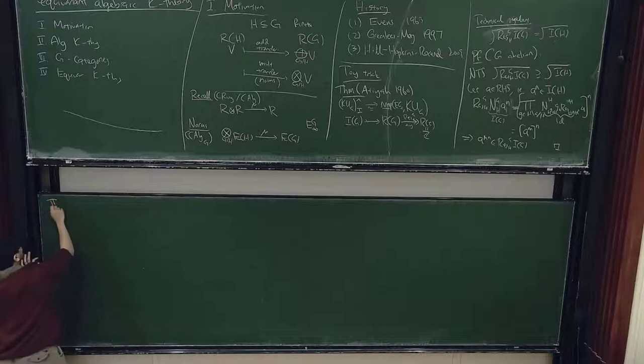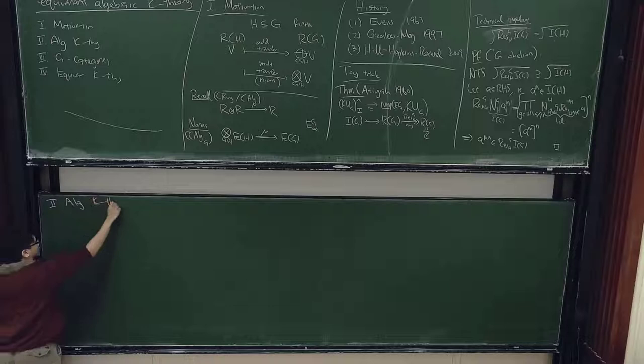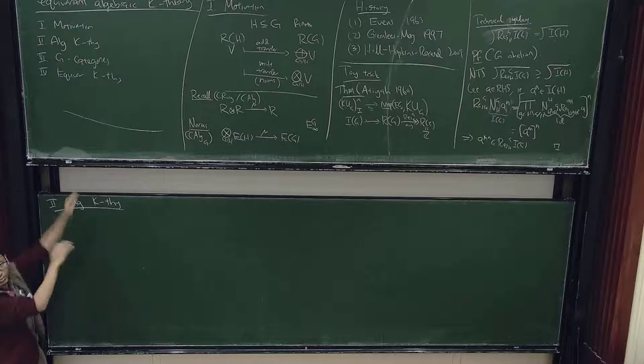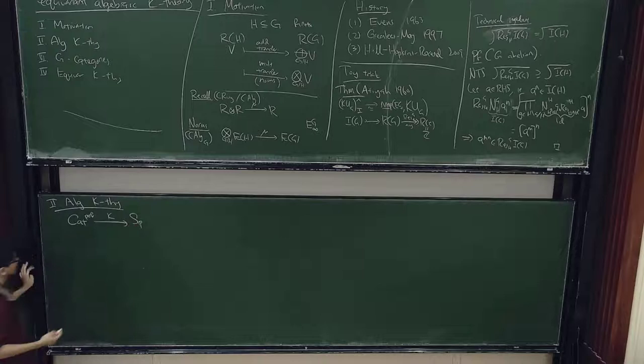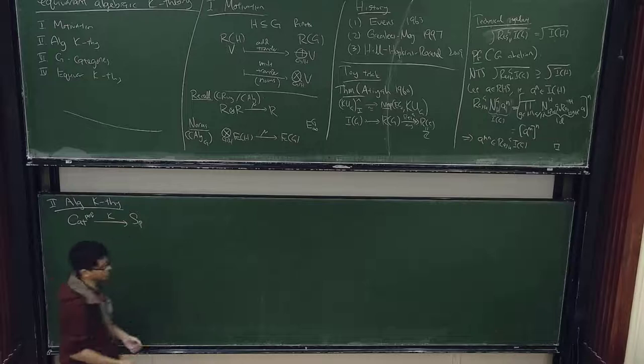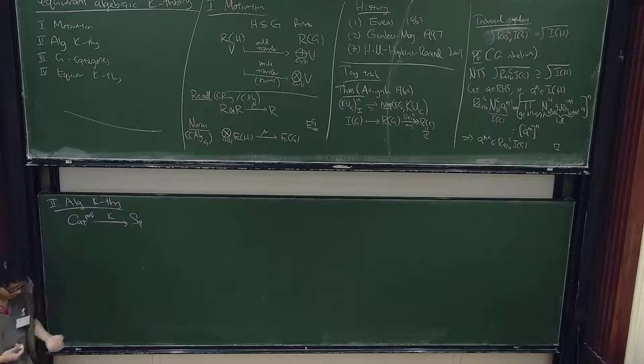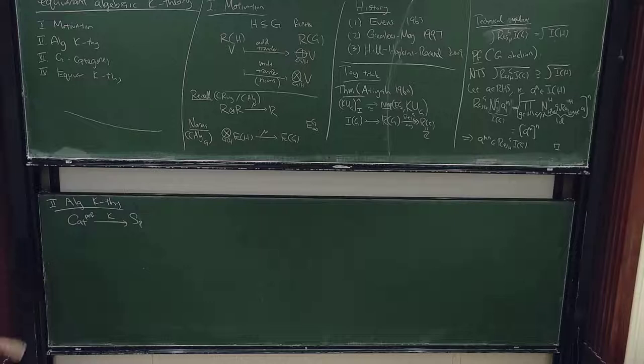Now I'm going to refresh you on algebraic K-theory, and the goal is to mix these two worlds. From the modern perspective, algebraic K-theory can be viewed as a functor from the infinity-category of perfect stable categories — idempotent complete stable categories — to spectra. It's the universal additive invariant.